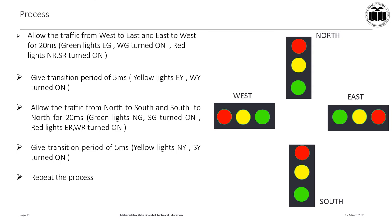To design the program for the traffic light controller, we need to set a process for turning the lights on and off. Since all LEDs are in common cathode mode with cathodes grounded and anodes at the port pins, setting a port pin turns a light on and clearing it turns it off. The first step is to allow traffic from west to east and east to west for 20 milliseconds: turn on the green lights of east and west sides, turn on the red lights of north and south sides, and keep yellow lights on all four sides off.